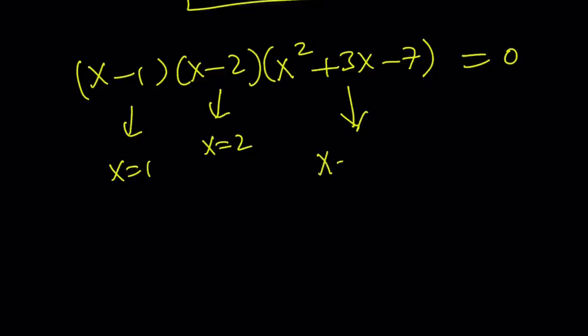If you use the quadratic formula, negative b, plus minus the square root of b squared minus 4ac, you're going to get negative 3 plus or minus the square root of 37 all over 2. So those are the solutions.